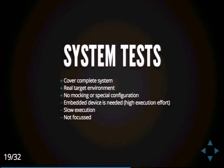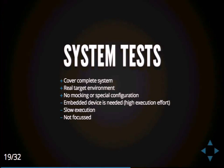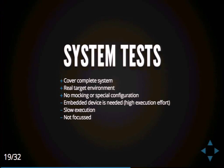There are system tests, also known as end-to-end tests, which typically cover the complete system and are executed against the real target environment — in our case, the router device. There's no need for mocking because you have the real hardware. But system tests require the real target environment, meaning high execution effort — you must be connected to the hardware, which implies slow execution. Most importantly, system tests are typically not focused. You test the outer interface, but if the test fails, you may not know which component was actually defective.